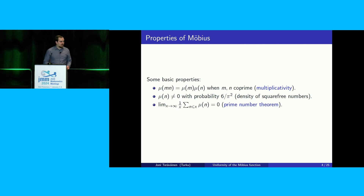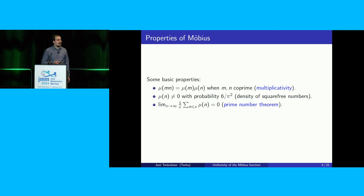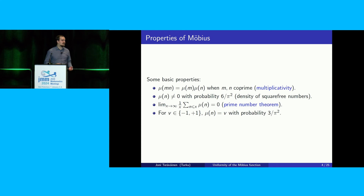The mean value of the Möbius function is 0. If you look at the sum of mu of n and take the average going to infinity, it converges to 0. This is in fact equivalent to the prime number theorem, about the asymptotic for the number of primes. What this means is that both the values plus 1 and minus 1 are taken with equal probability — each with probability 3 over pi squared.